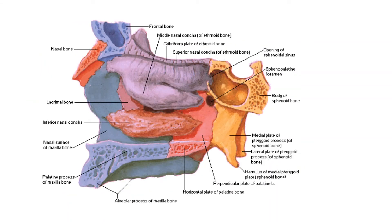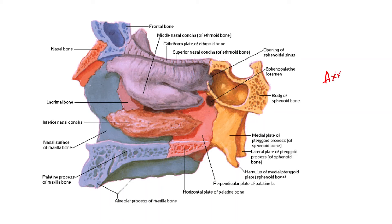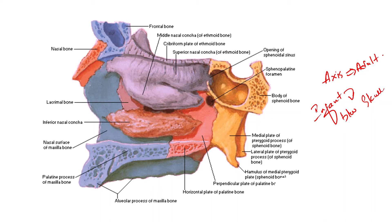The hard palate lies at the level of the axis vertebra in case of adults. In case of infants, the hard palate is located between the base of the skull and the atlas.